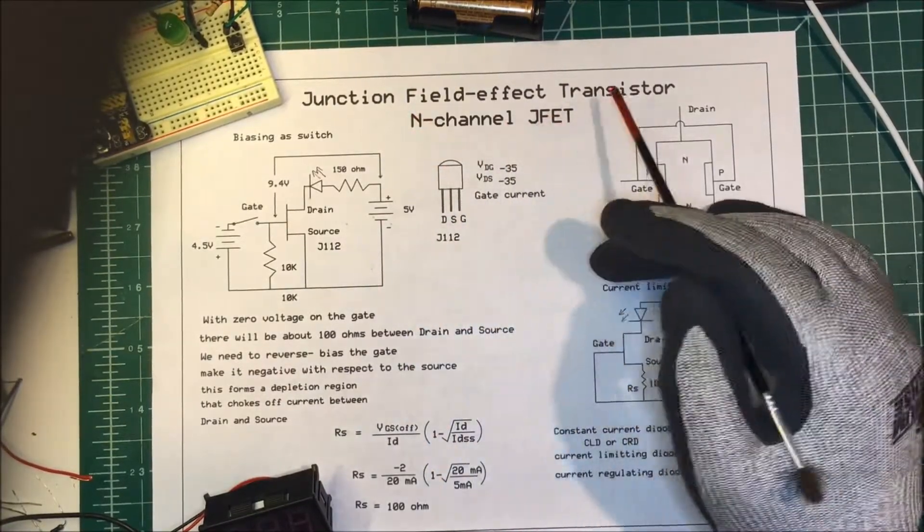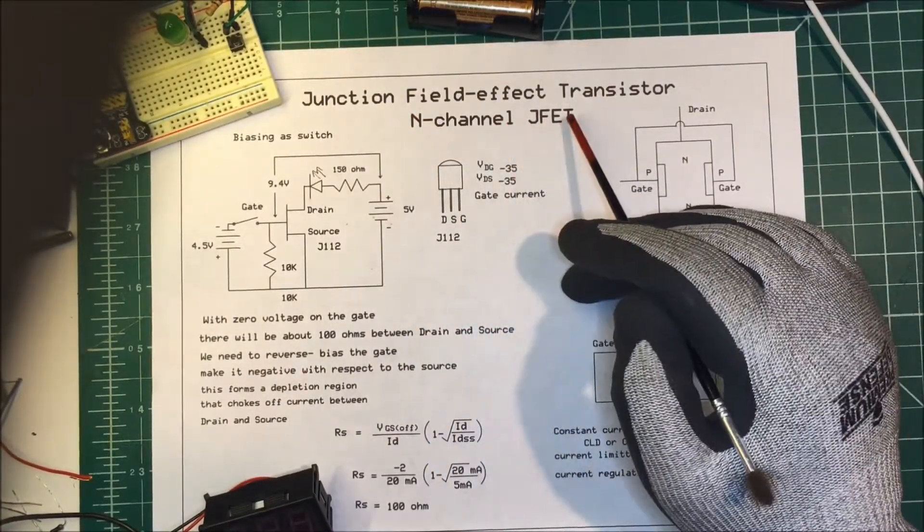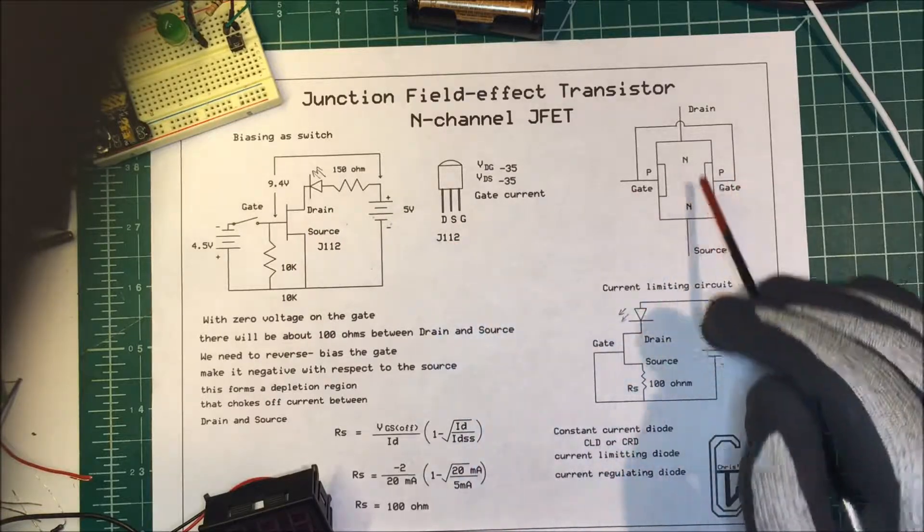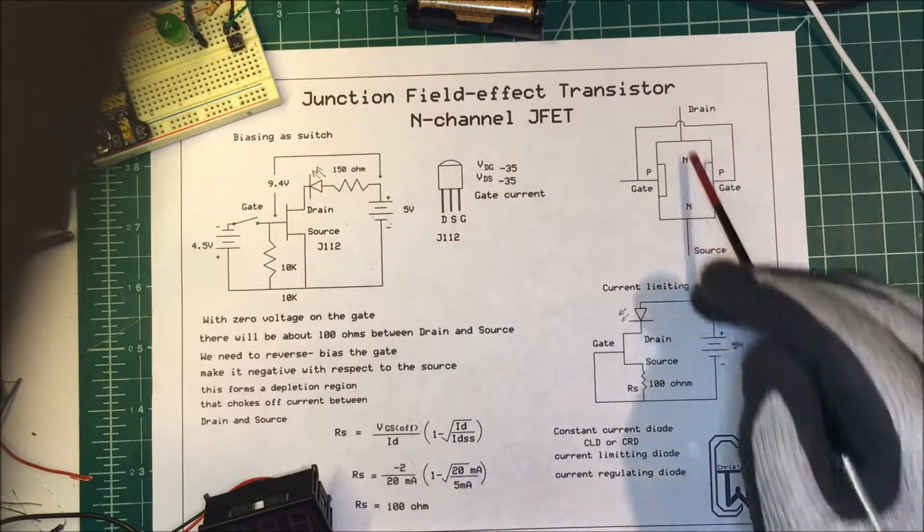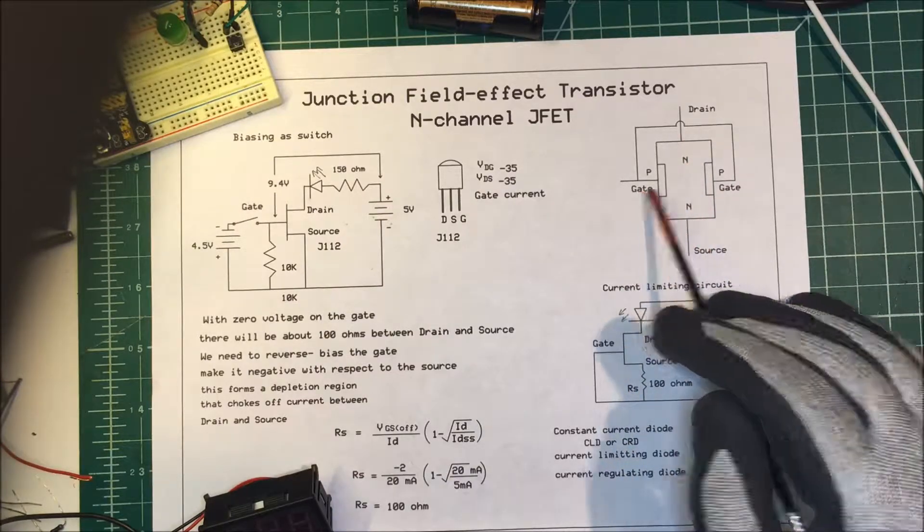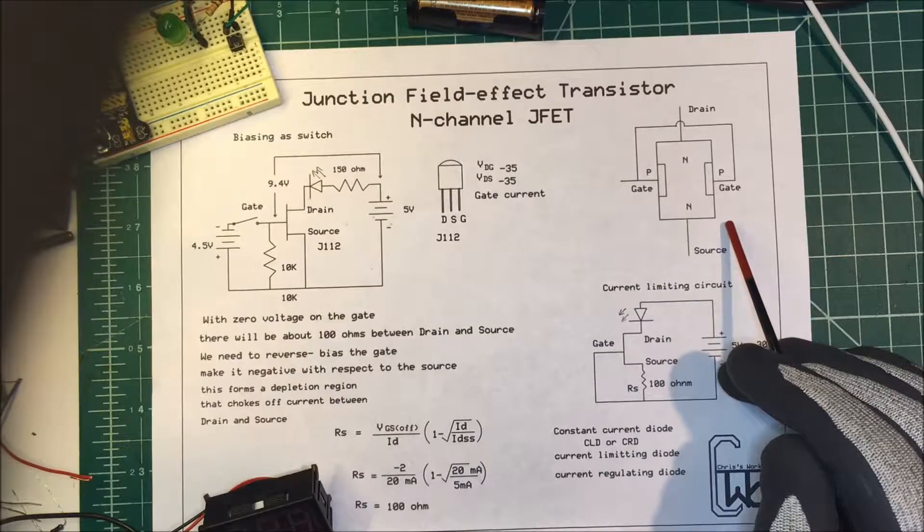Let's talk about a junction field effect transistor. We're going to use an N-channel JFET. I'm using the J112, and this is how they're constructed. The drain and the source are tied to a piece of N material, hence the N-channel, and the gates are P-type material.